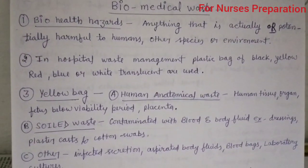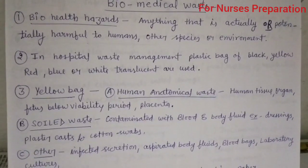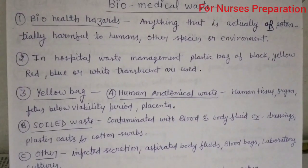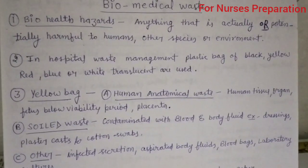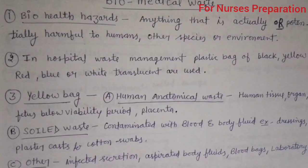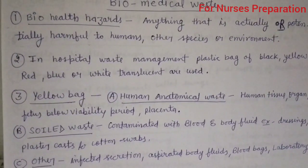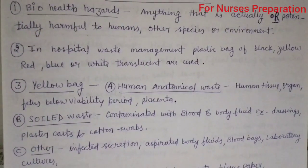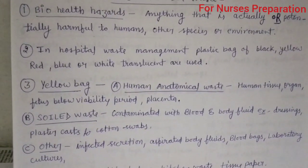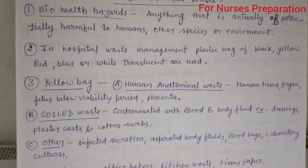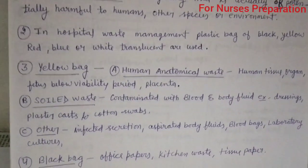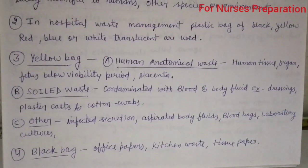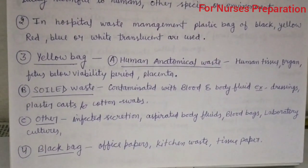Point number three: let's see which type of waste is segregated in the yellow bag. First, human anatomical waste — like human tissue, organs, fetus below viability period, and placenta — is collected in the yellow bag. Solid waste contaminated with blood and body fluids, such as dressings, plaster casts, cotton, and swabs, is also included. Other substances collected in the yellow bag include infected secretions, aspirated body fluids, blood bags, and laboratory cultures.